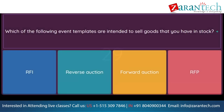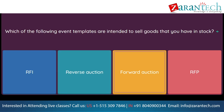Question: Which of the following event templates are intended to sell goods that you have in stock? Option 1: RFI. Option 2: reverse auction. Option 3: forward auction. Option 4: RFP.